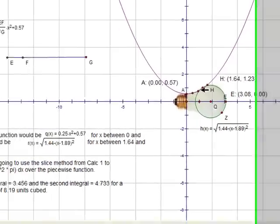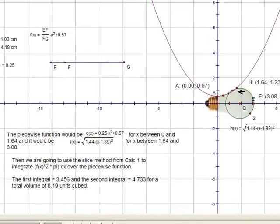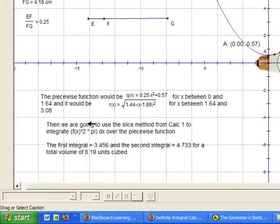So the first part is from 0 to 1.64, this part of it. The second part is that piece of the circle from 1.64 to 3.08. Now we're going to use that slice method from calculus 1 to integrate f(x) squared times pi dx over both the pieces.